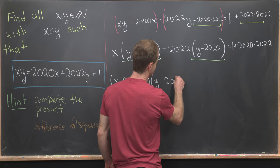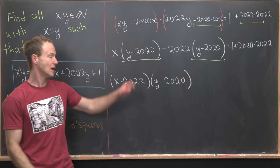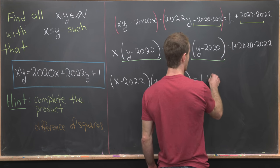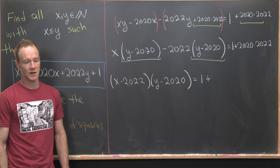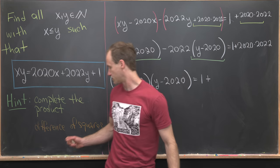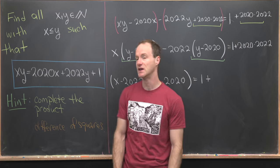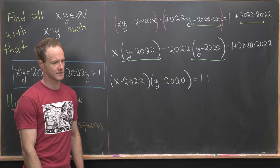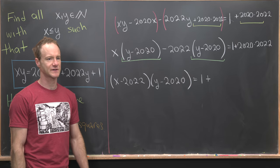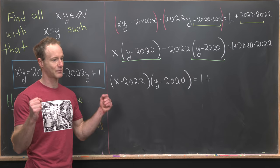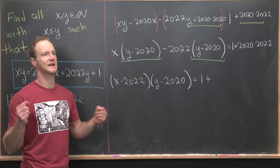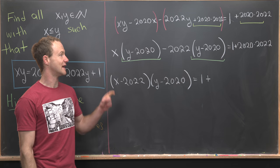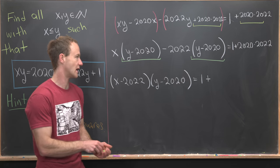Now we can go ahead and factor this out. That'll leave us with (x - 2022)(y - 2020) = 1 + ... But now I'm going to rewrite this 2020×2022 carefully so that I can exploit this last hint, which is using a difference of squares. So recall how a difference of squares factors as the product of two numbers that differ by 2, like a - 1 and a + 1. So that's exactly how we want to look at this right here.